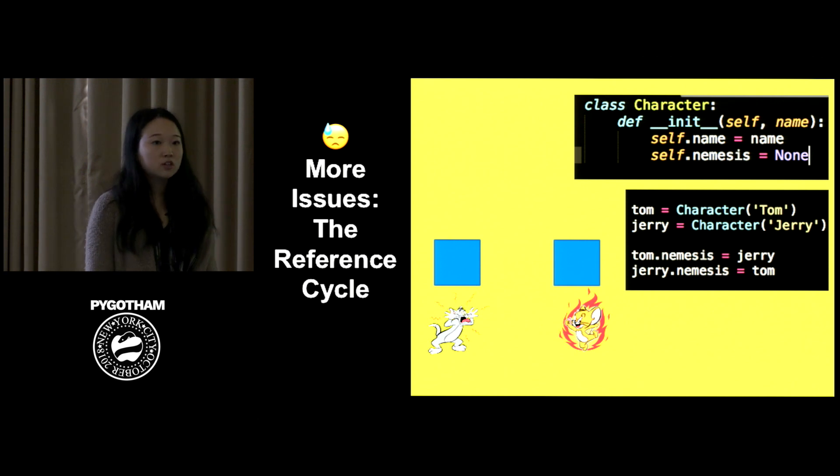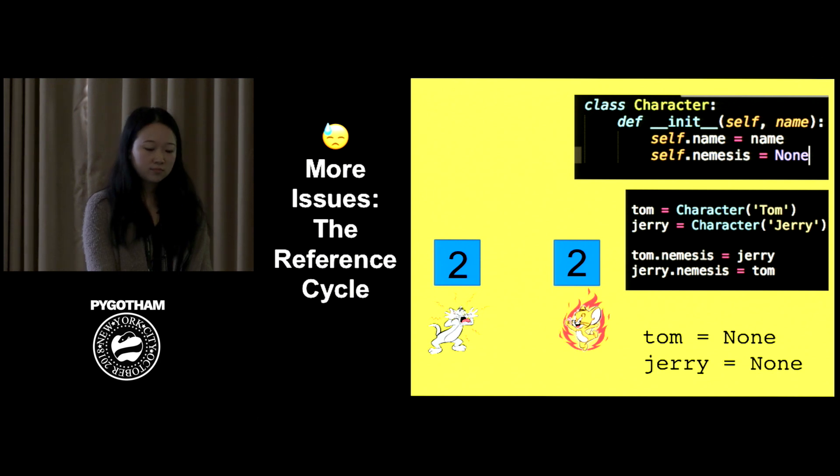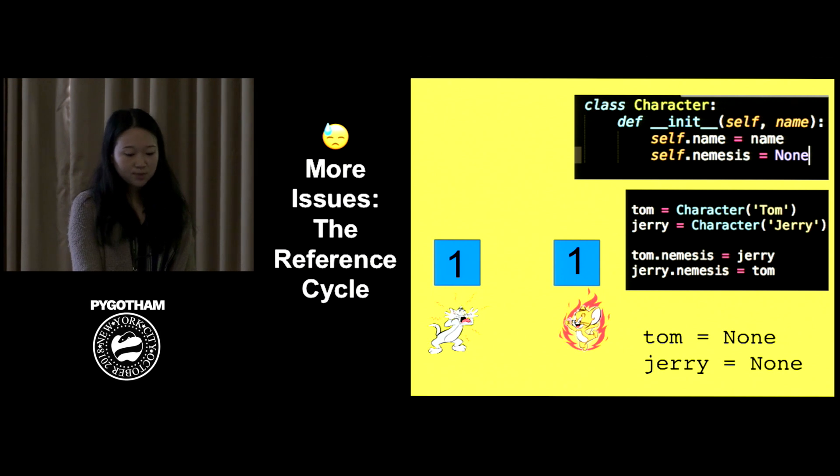Another issue that might happen is something called a reference cycle. So let's look at how this might work. If I create a class called character and I create two instances of this class, Tom and Jerry, at this point in the program, Tom would have one reference, Jerry would have one reference. When I assign Tom's nemesis to Jerry, that increases Jerry's reference count by one, so one to two, and the same thing happens here. Now Tom's reference will increase from one to two when I assign Jerry's nemesis to Tom. So what happens if I remove these from my program? I assign both Tom and Jerry to none. There'll still be one reference to both Tom and Jerry and that's because they're referring to each other. When you assign something to none, it's not yet removing the fact that Tom's nemesis is Jerry and Jerry's nemesis is Tom.